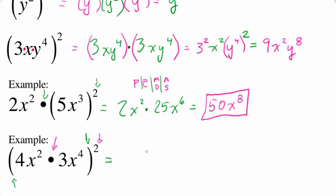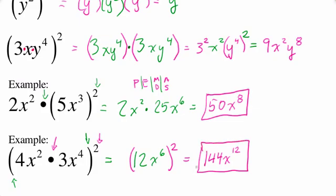So we do the multiplication first: 4x squared times 3x to the fourth is simply 12x to the sixth — 4 times 3 is 12, and x squared times x to the fourth gives 2 plus 4 equals 6. But now we have to put this in parentheses because we have not yet squared anything. Using the product to a power rule, 12 is getting squared to give 144, and x to the sixth is being squared to give x to the twelfth (power to a power: 6 times 2). Our final answer is 144x to the twelfth.